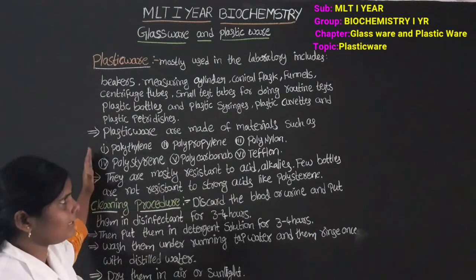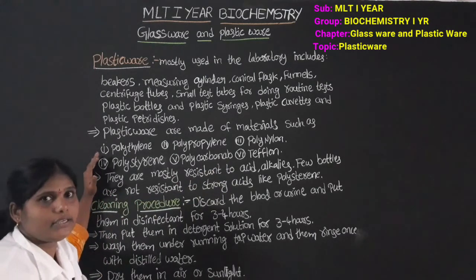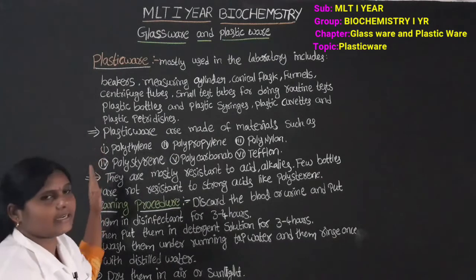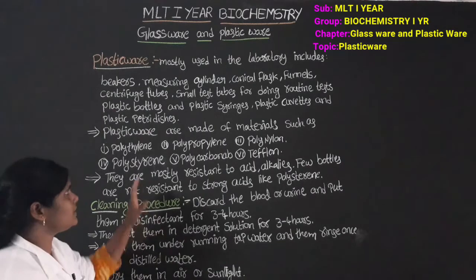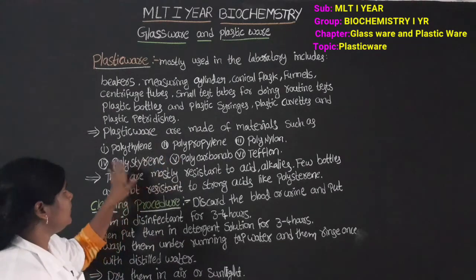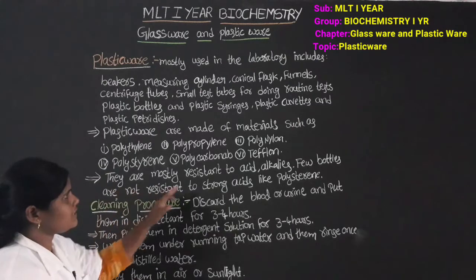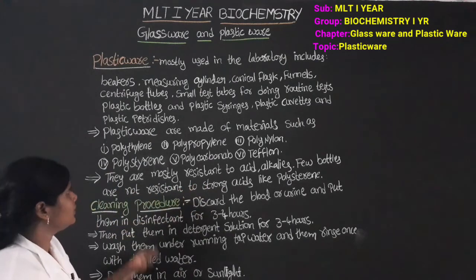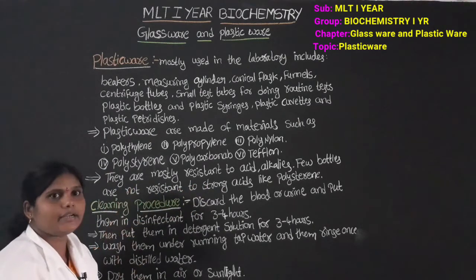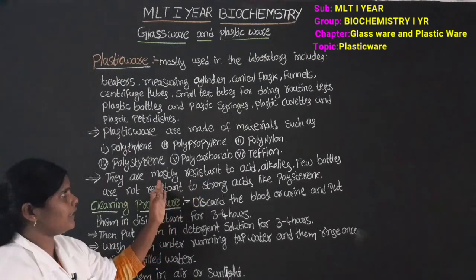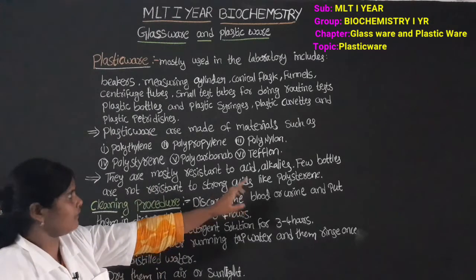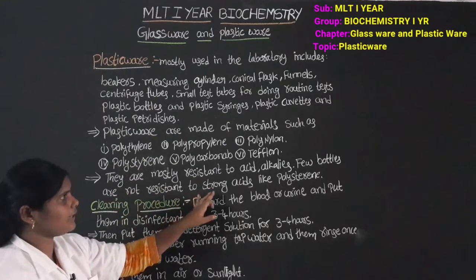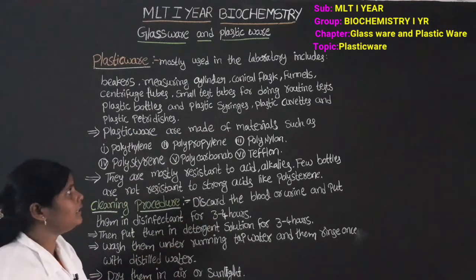Plasticware is made of plastic material. They are mostly resistant to acid and alcohols — most plastic items are resistant to strong acids like polystyrene.